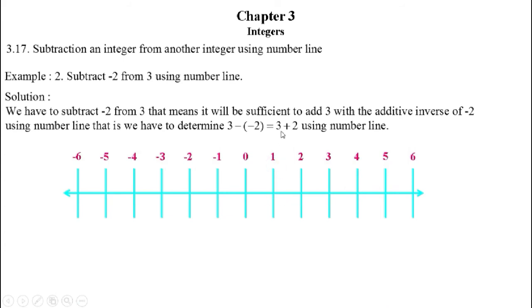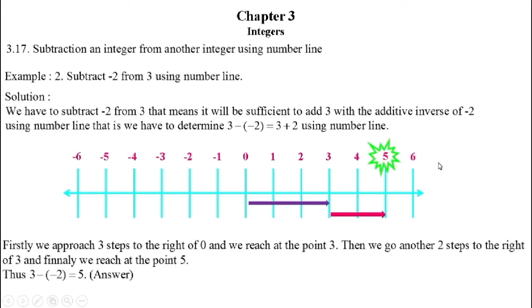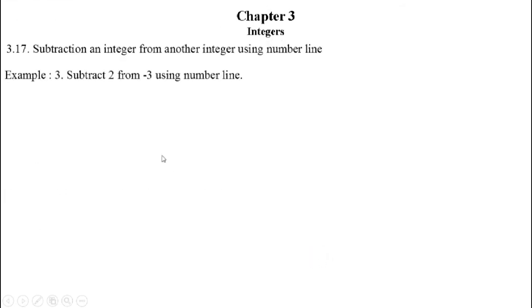On the number line, the first number is 3, so we go 3 steps to the right of 0 and reach the point 3. The second number is also positive 2, so we approach another two steps to the right of 3 and reach the point 5. Thus, 3 minus (minus 2) equals 5. Description: firstly approach 3 steps right of 0, reach point 3, then go 2 more steps right of 3, finally reach point 5.